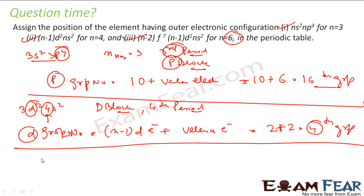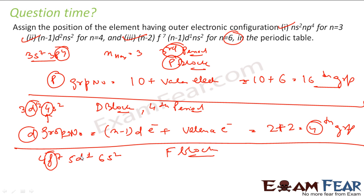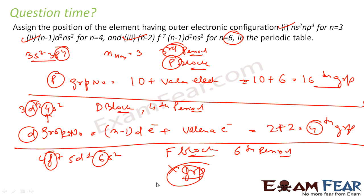For the last example, n equals 6: n minus 2 becomes 4 giving 4f⁷; n minus 1 becomes 5 giving 5d¹; and 6s². Since the last electron goes into f, this is f-block. The maximum principal quantum number is 6, so it is the sixth period. For f-block elements — lanthanides and actinides — there is no group number.